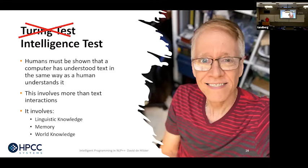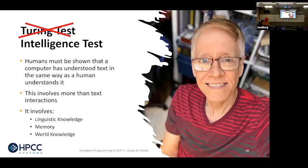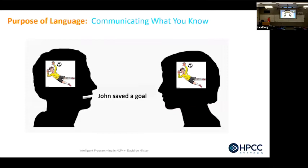I'm going to put my face on the line and say we don't want to look at the Turing test — we want to look at an intelligent test. To me, what it means is humans must be shown that the computer has understood text in the same way as a human understands it. Every robot we see in movies, this is how we would judge it. This involves more than text interactions — it involves linguistic knowledge, memory, and world knowledge.